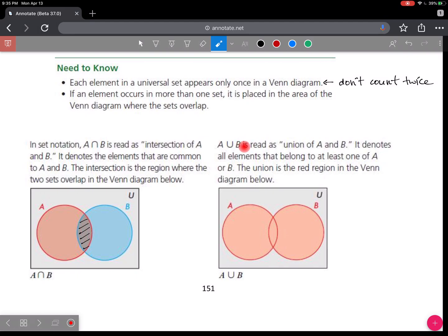A union B denotes all elements that belong to at least one of A or B. So you can be part of A, or you can be part of B, or you can be part of both. It's everything. So you shade A and you shade B. And notice how the elements that are in both get shaded twice. And we have to make sure that we don't count these things twice.